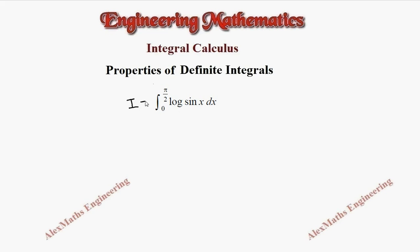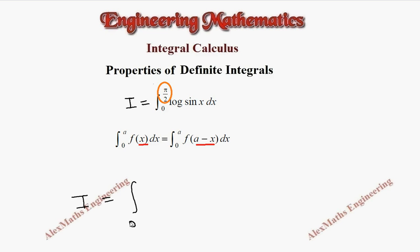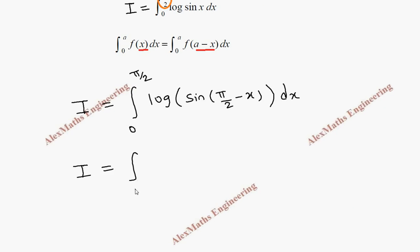Let's take this as I equal to. We are going to apply the property: integral 0 to a of f(x) dx equals integral 0 to a of f(a minus x) dx. So wherever x appears, we replace it with a minus x, where a is the upper limit. In this problem the upper limit is pi by 2. So our I will become integral 0 to pi by 2 of log sin(pi by 2 minus x) dx. Now sin(pi by 2 minus x) is cos x, so we get integral 0 to pi by 2 of log cos x dx.